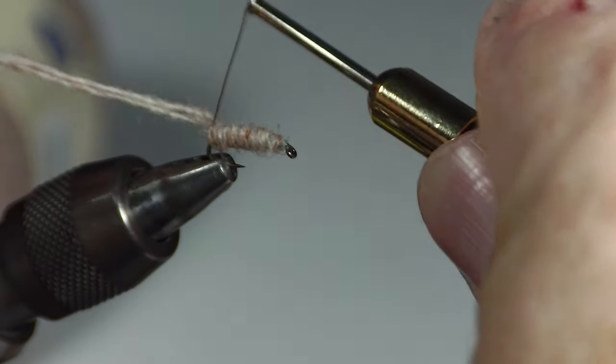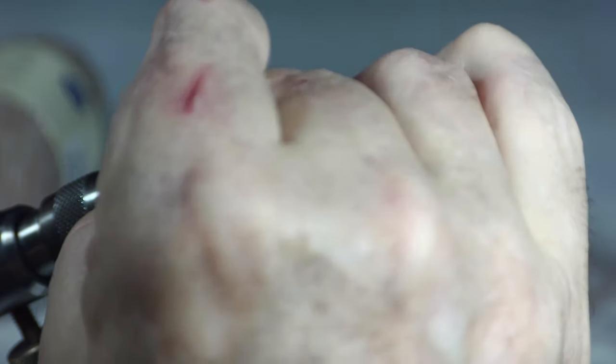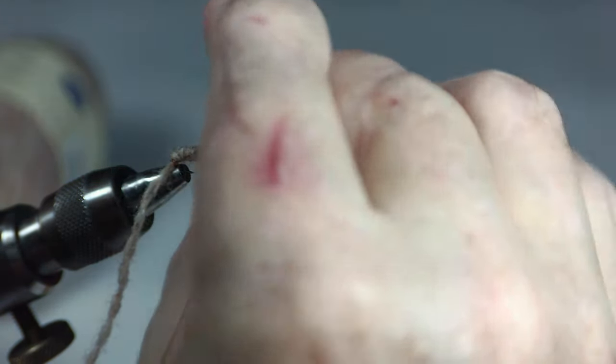And then when you get to the back, just take a couple of wraps. And I don't try to whip finish this. I just do half hitches. The nice thing about doing this with copper wire is you don't have to worry too much about it going anywhere. And I'll just do three hitches there.